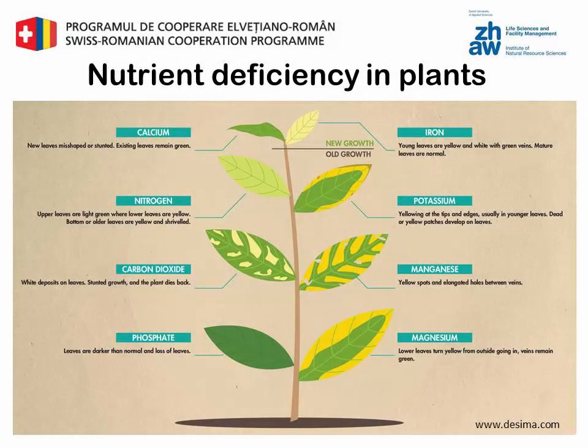Nitrogen deficiency: the plant is light green, lower leaves are yellow, the stalks are too slender and blossoms are falling down. Phosphate deficiency: the plant is dark green, leaves have red or purple discoloration, and there is reduced growth.